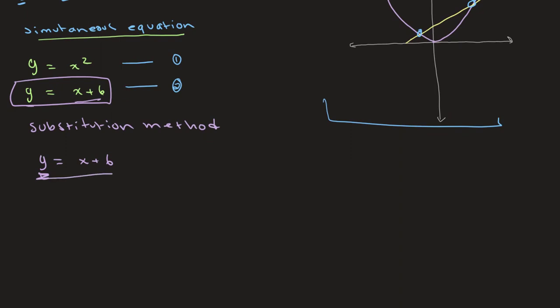Equation 2 is already written nicely for us: y is equal to x plus 6. We already have y separated, so we can plug it into our other equation. Substituting, x plus 6 is equal to x squared. Now we need to solve for x, and we can do that by expanding to get x squared.